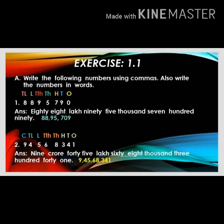In this question they have given a seven-digit number, so first we have to write the place value on top of the number. We start from the right side: ones, tens, hundreds, thousands, ten thousands, lakhs, ten lakhs. Now we can write the number name: 88 lakhs, 95 thousand, seven hundred and ninety. In the Indian place value system, we separate by commas — two digits each according to the place value.